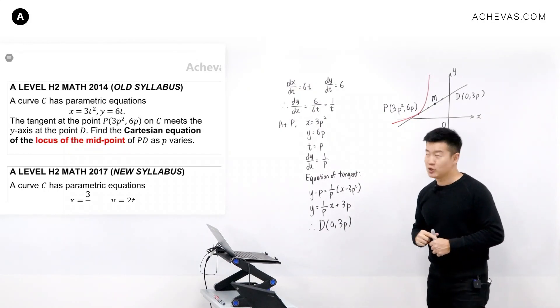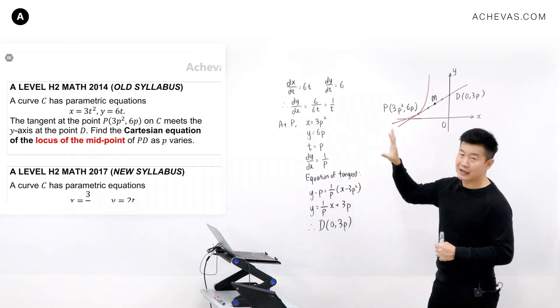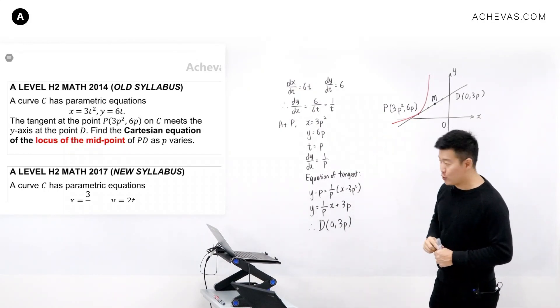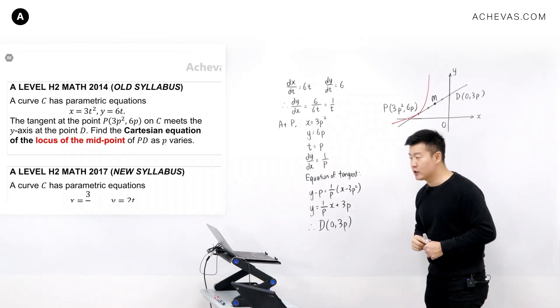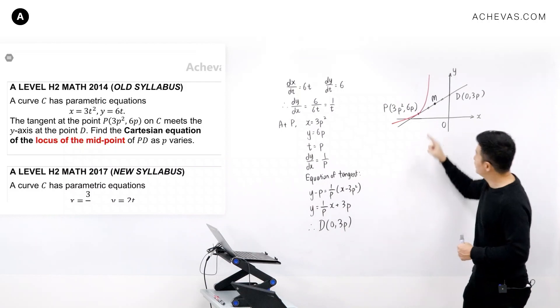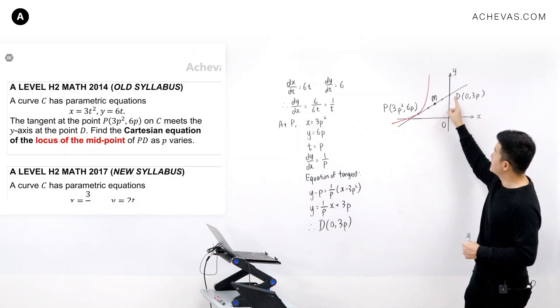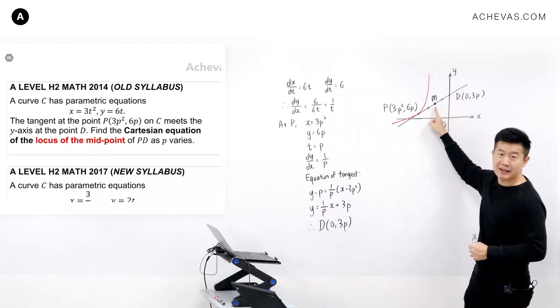In the next part of the question, we are asked to find the Cartesian equation of the locus of the midpoint of P, D, which we are representing as M.